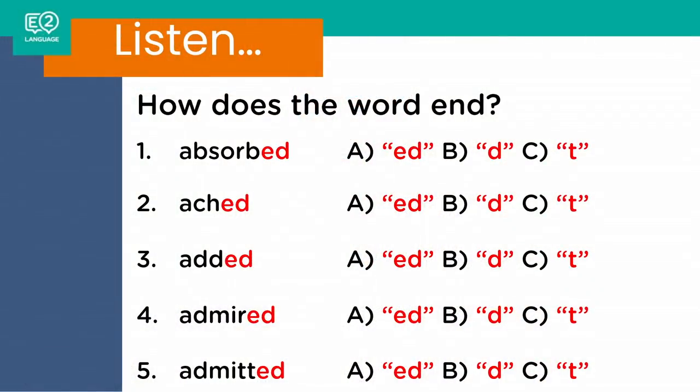What you're going to do is write down one to fifteen — fifteen little listening questions I'm going to give you. What I want you to do is identify whether the final sound of the word is an 'id' sound (A), a 'd' sound (B), or a 't' sound (C). Okay, ready? Is it A, B, or C?